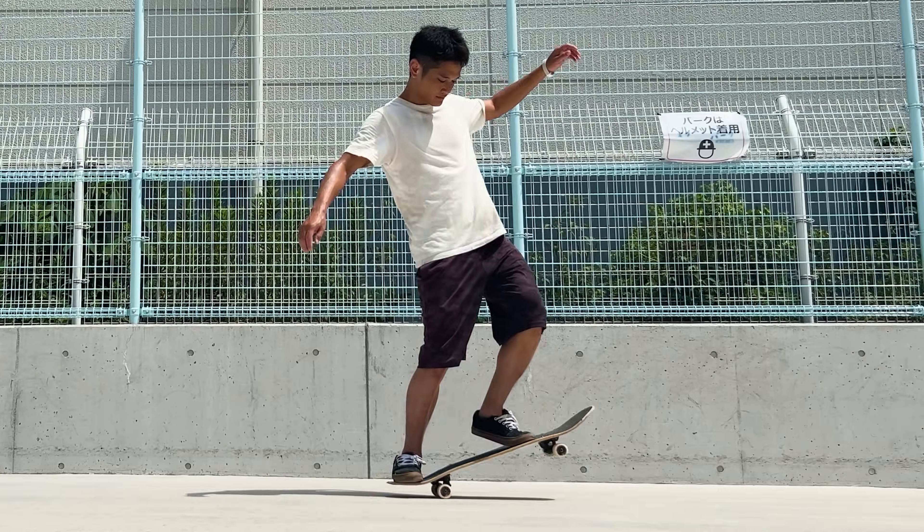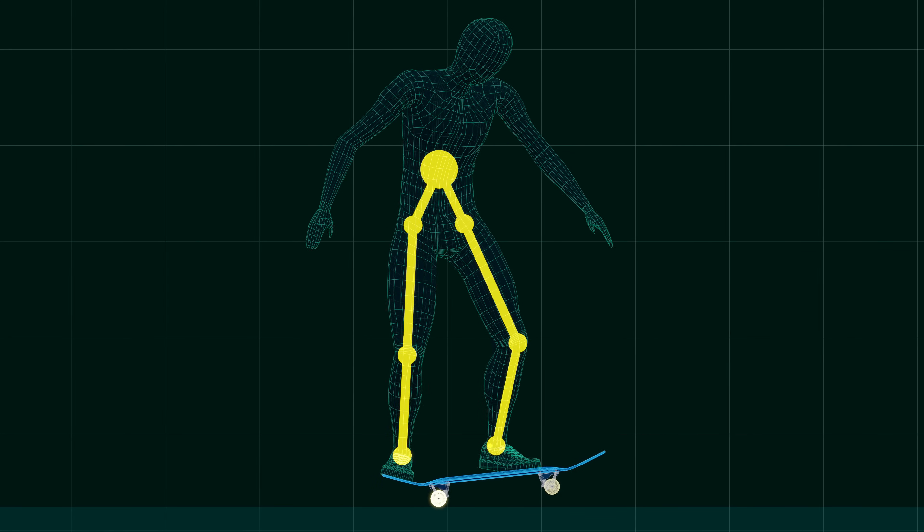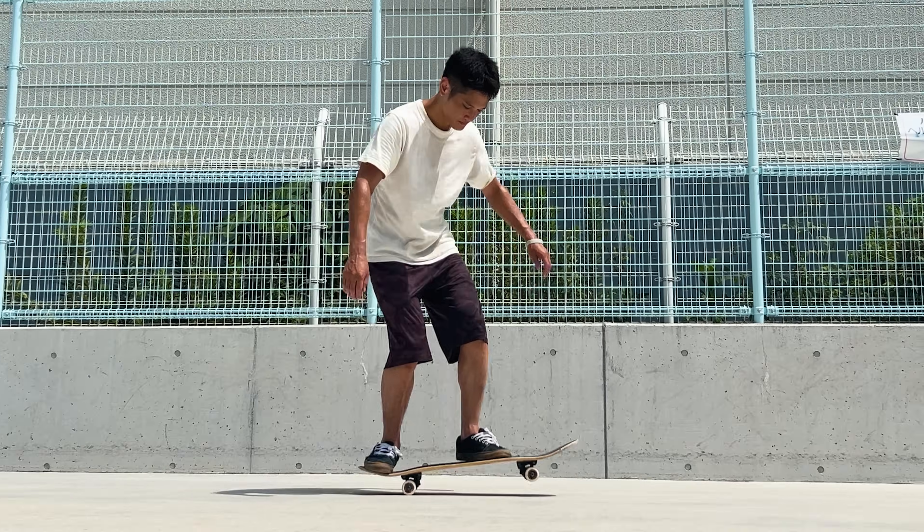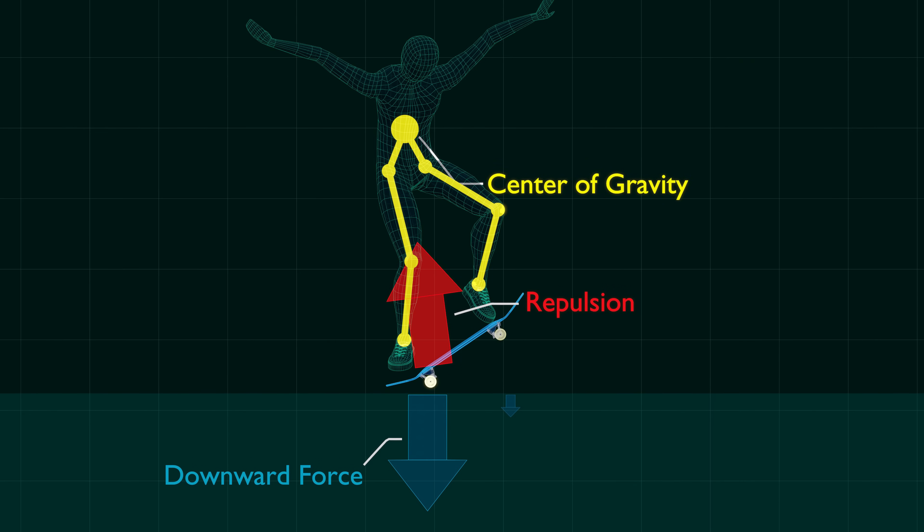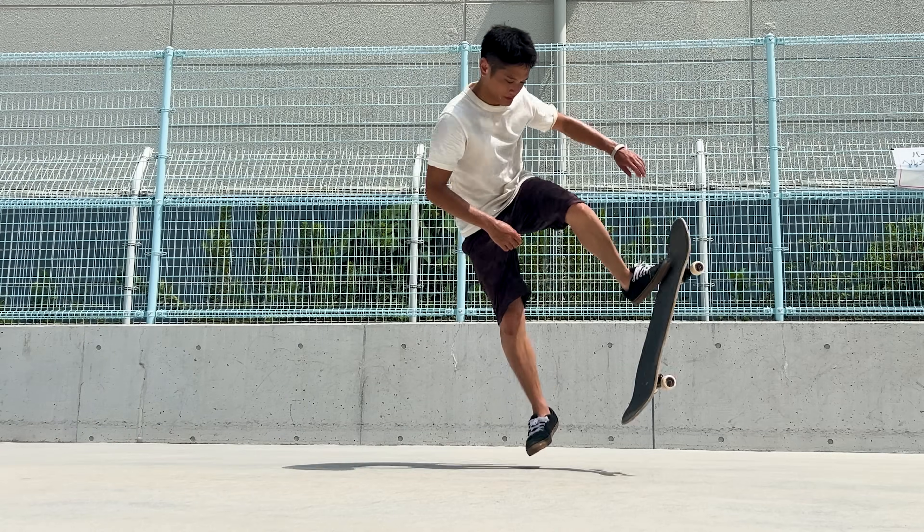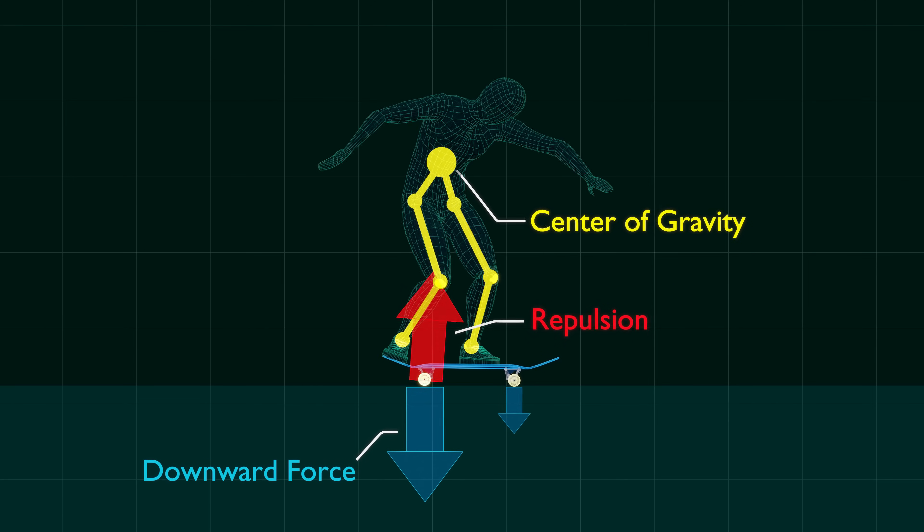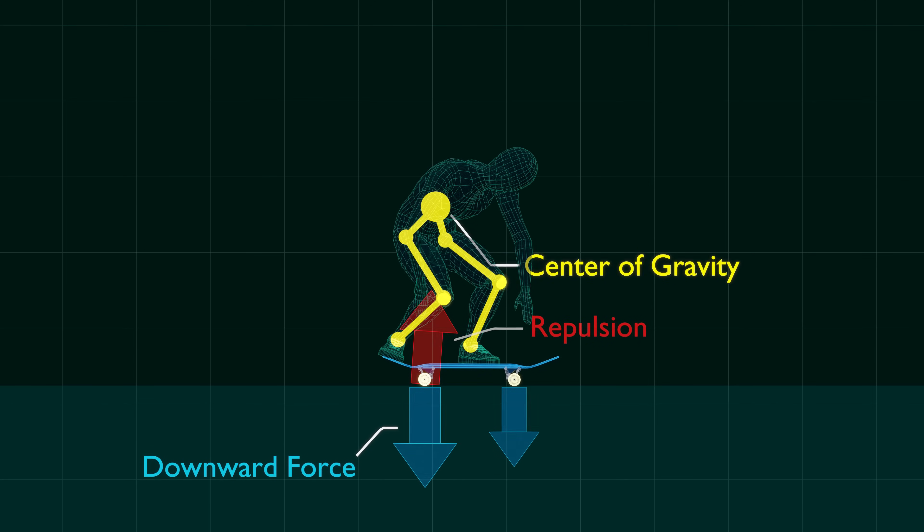One thing to keep in mind is that if you put too much weight on your back foot, you'll end up doing a manual. Additionally, if you shift your weight over your back foot while extending your body, you'll end up shooting the board forward. The ideal is to be able to move your center of gravity vertically up and down between your feet.